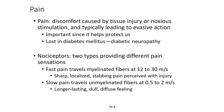Nociceptors are sensory receptors that specifically respond to pain, just as photoreceptors respond to light and thermoreceptors respond to temperature. There are two types providing different pain sensations. Fast pain travels in myelinated fibers at 12 to 30 meters per second — that's the sharp, localized, stabbing pain, also called the first pain perceived with an injury. Slow or second pain travels in unmyelinated fibers at 0.5 to 2 meters per second — this is the longer-lasting, dull, diffuse feeling, like what you'd feel with a headache.